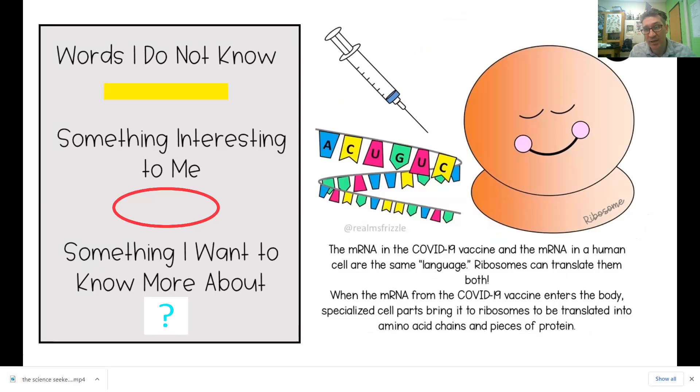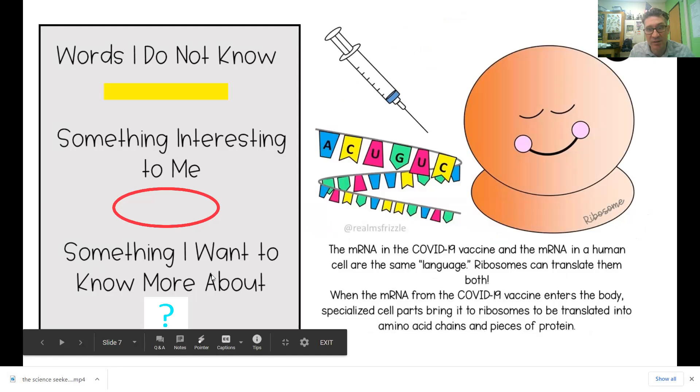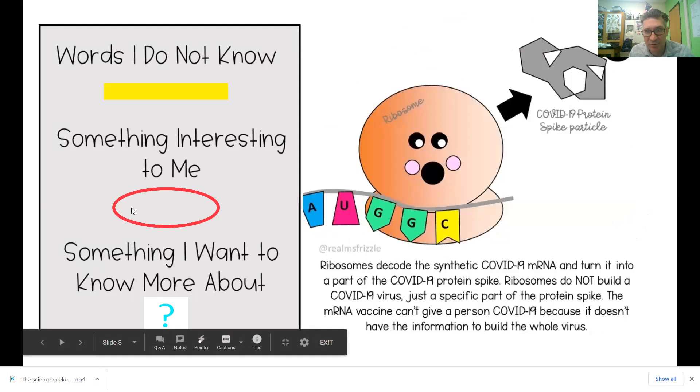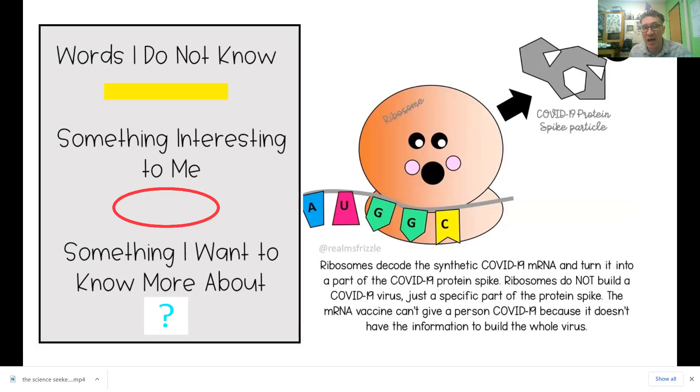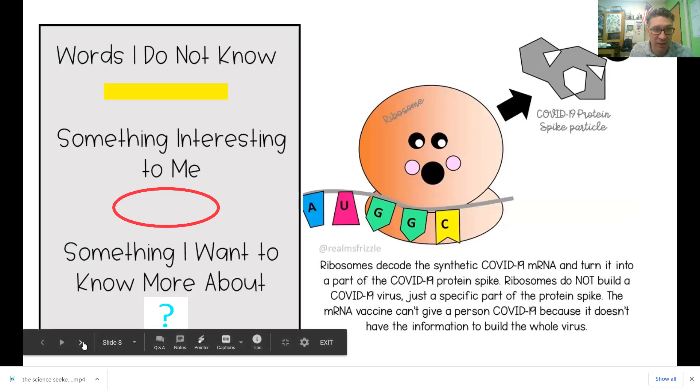When mRNA from COVID-19 vaccine enters the body, special cell parts bring in the ribosomes, which translate it into amino acid chains and pieces of protein. Ribosomes decode the synthetic COVID-19 mRNA and turn it into a part of the protein spike. Ribosomes do not build the entire virus, though, just a specific part of the protein spike. mRNA vaccine can't give a person COVID-19 because it doesn't have the information to build the whole virus, just the spike.